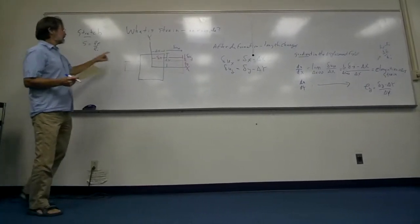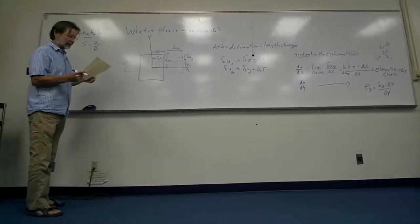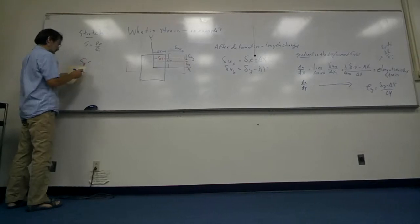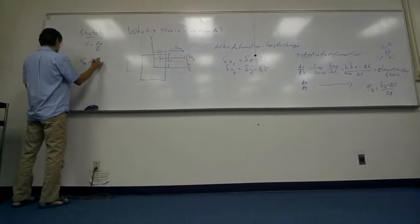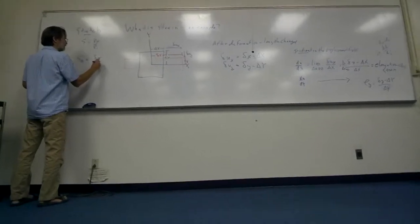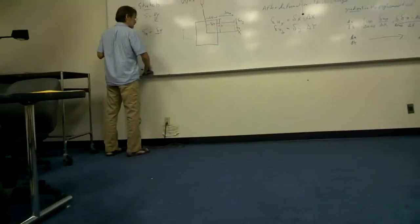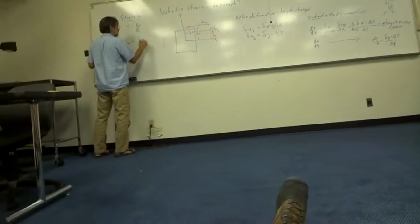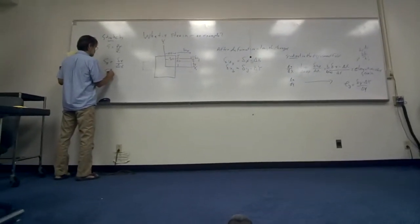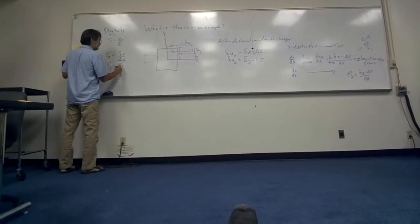But if you relate stretches back to this quantity, stretch is final length minus initial length. So stretch in the x-direction is delta, little delta x, final length over big delta x, final length over initial length. And big delta, this is little delta y, little big delta y.